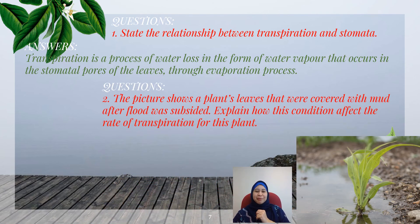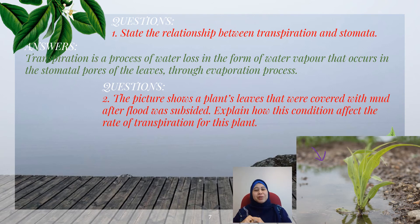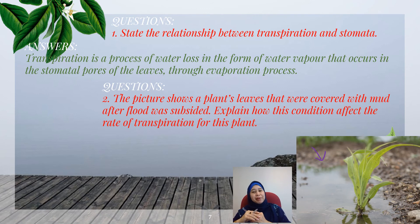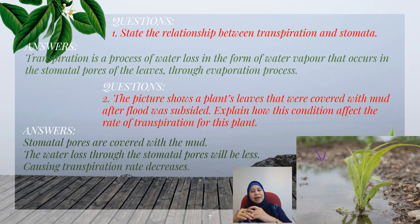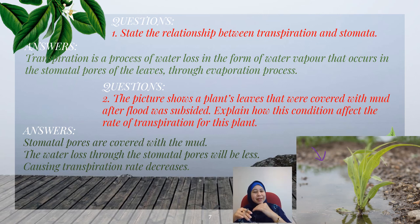Question number two. The picture shows plant leaves that were covered with mud after a flood subsided. Explain how this condition affects the rate of transpiration for this plant. When the leaves are covered with mud, the stomata pores are covered with mud, so the water loss through the stomata pores will be less. This means that the transpiration rate will decrease.